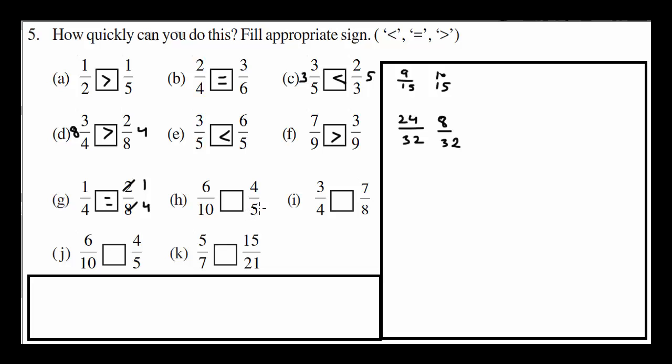Again. Multiply second fraction by 2. Make it like. 4 to the 8. It would be 8 over 10. Obviously 4 over 5 is greater than 6 over 10. Therefore greater sign.